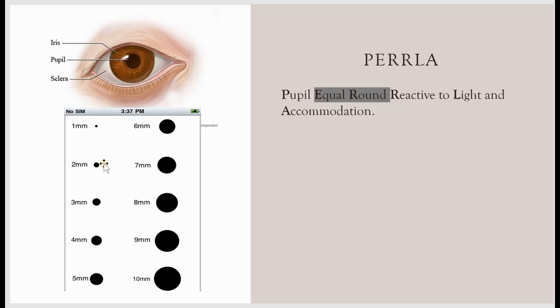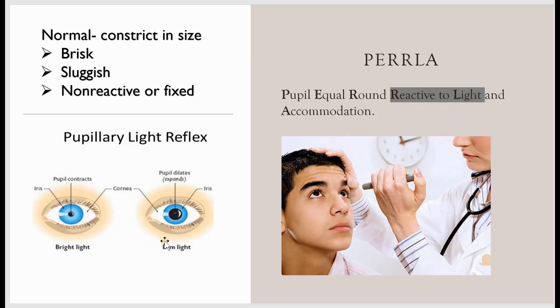Initially you have to assess the size — whether both pupils are equal in size. Normally the size ranges anywhere from 2 to 5 mm. You will also assess whether the pupils are round in shape.